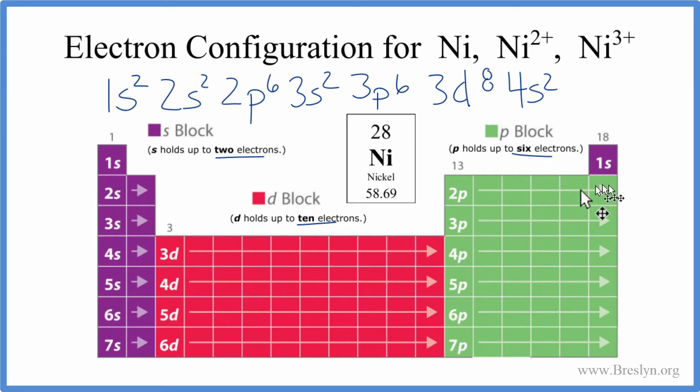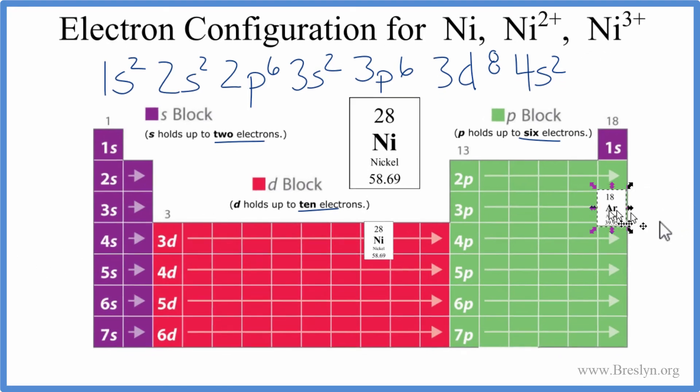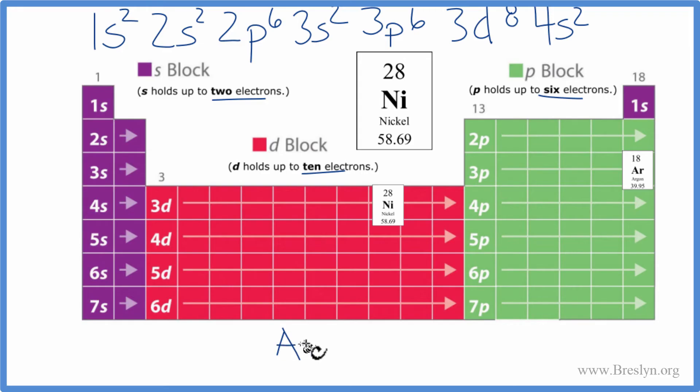Let's write this in a condensed notation. So nickel is 3d⁸, so let's put that here: 3d¹, 2, 3, 4, 5, 6, 7, 8. That's where nickel is on the periodic table. So we'll go to the noble gas before nickel—that's argon right here. Then we write Ar and we put it in brackets, and then we write what comes after Ar. We have 4s¹, 4s², and then we have up to 3d⁸. So that's the condensed notation for nickel.